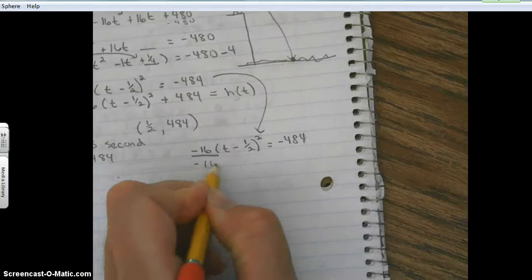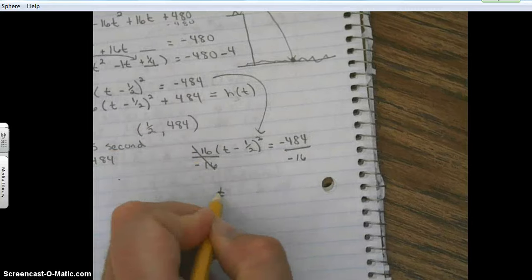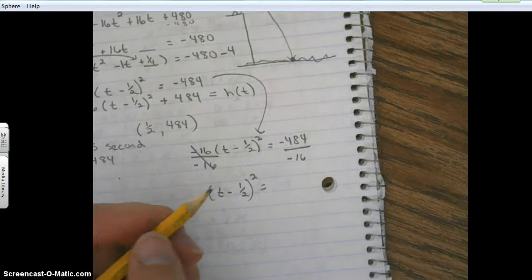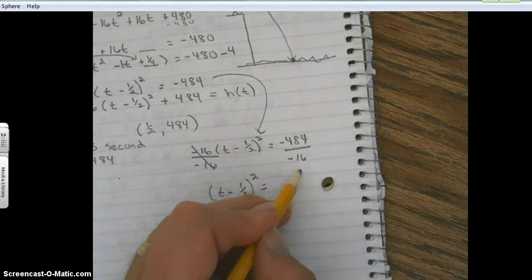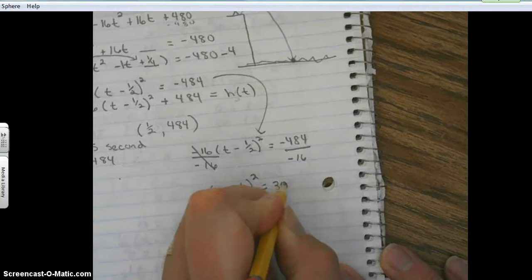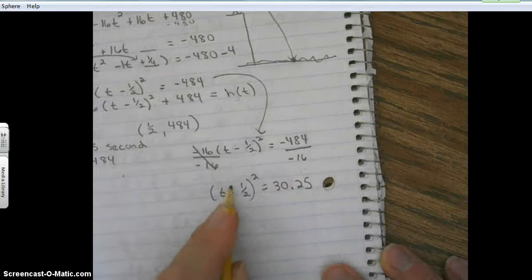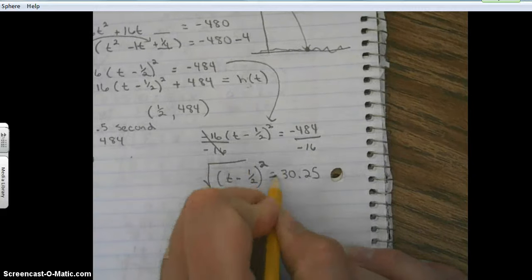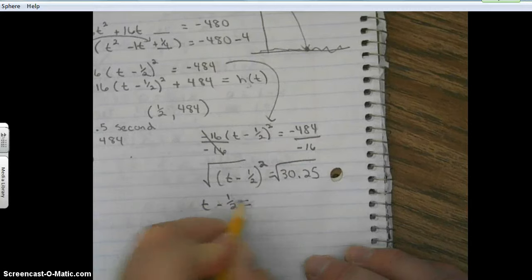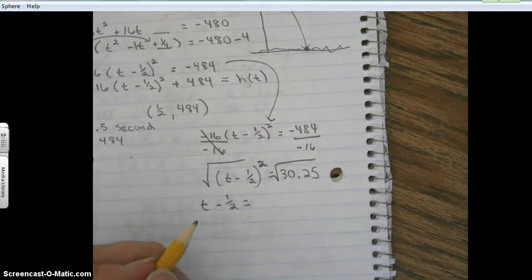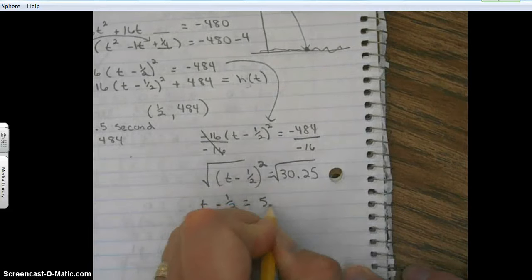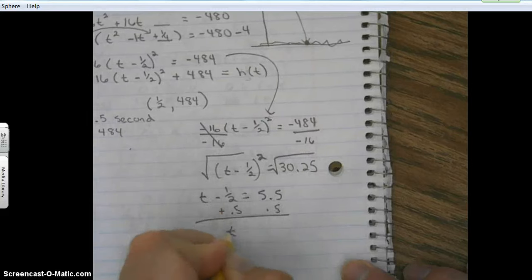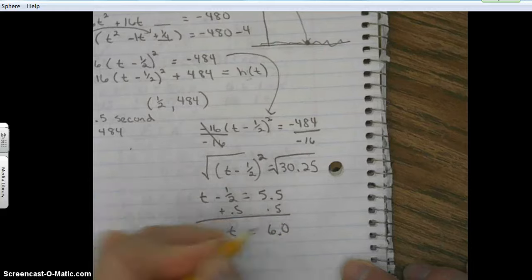Dividing by negative 16, dividing that. Now this is the only time you can use a calculator. In quadratic formula we want to do all this work here. We don't want the calculator to do the work for us, but calculations come in handy for that square root. Square root both sides. Calculator, square root of 30.25. Add a half on both sides. So the time it takes for Jason to hit the water is going to be 6.0 seconds.